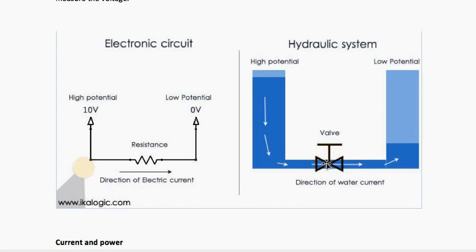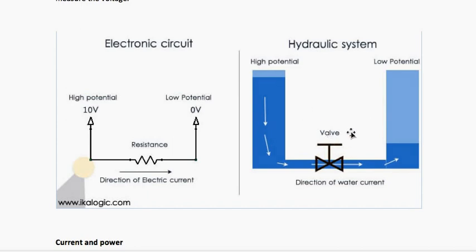The LED gets lit up because it is receiving current from the higher potential and the current is going through the LED. Just as the water level goes through the valve, the electrons move through the LED towards the low potential, so the circuit gets completed and the LED lights up.